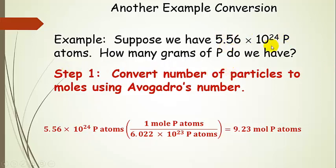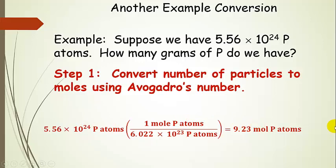Let's take this number of particles and convert it to moles using Avogadro's number. In this instance, it doesn't matter what we have — we're starting with phosphorus atoms, but they could have been potassium atoms, pencils, or anything. We're just going to use Avogadro's number to get to moles. Starting with 5.56 times 10 to the 24 phosphorus atoms, and there are 6.022 times 10 to the 23rd phosphorus atoms in one mole — dividing by Avogadro's number, the phosphorus atoms cancel out, and we end up with 9.23 moles of phosphorus atoms. That's a lot.